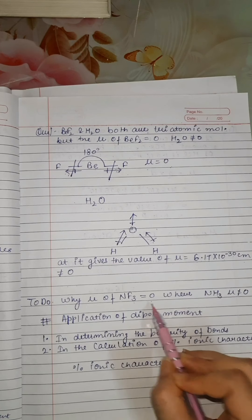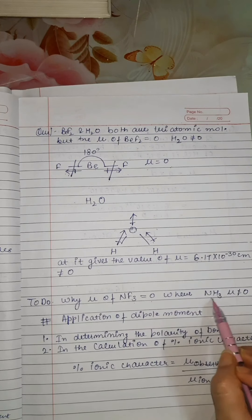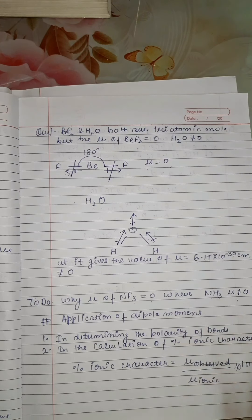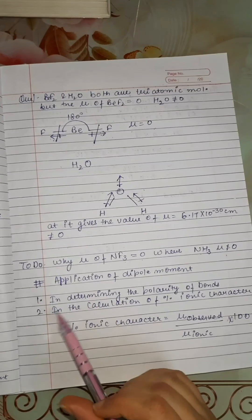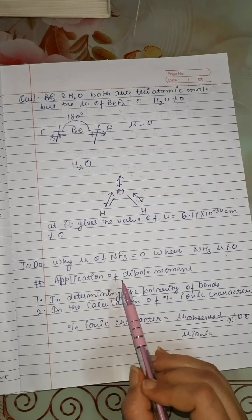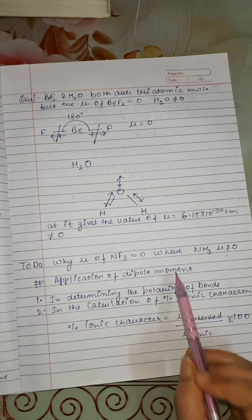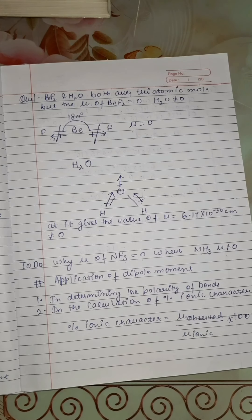If you have understood this concept, try to work out why the dipole moment of NF₃ equals zero whereas NH₃ is not equal to zero.